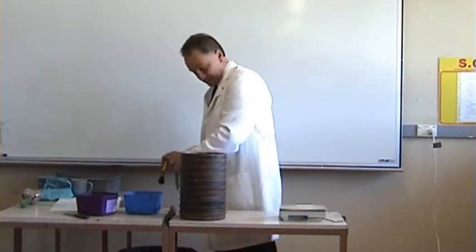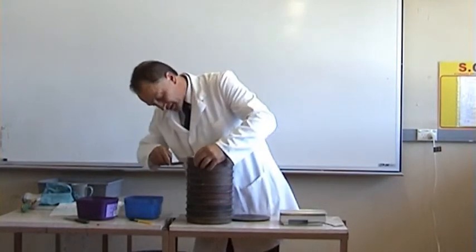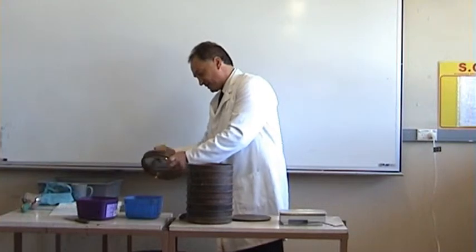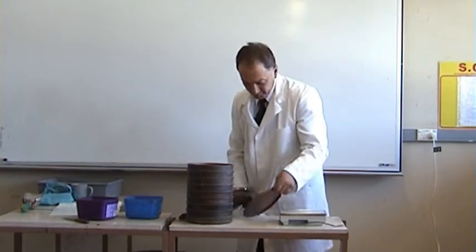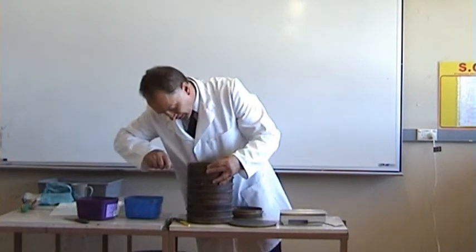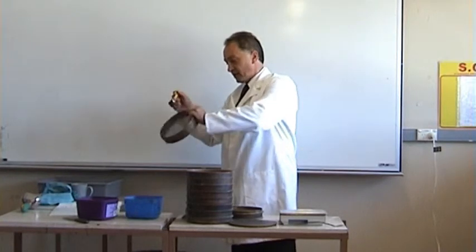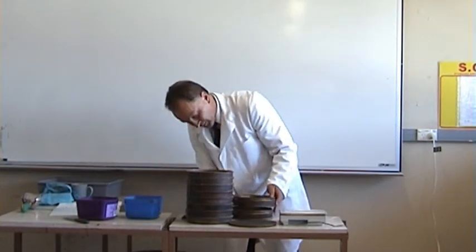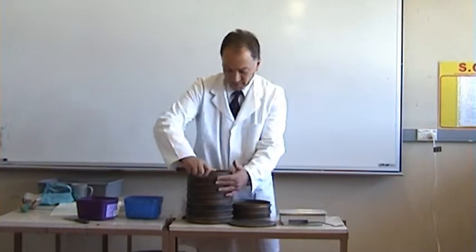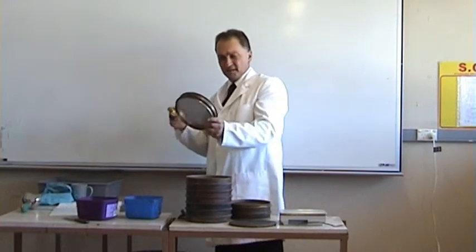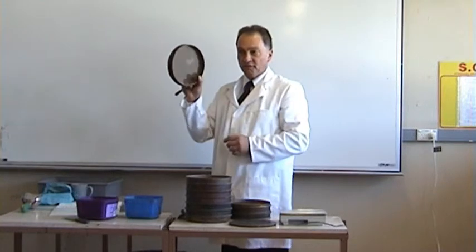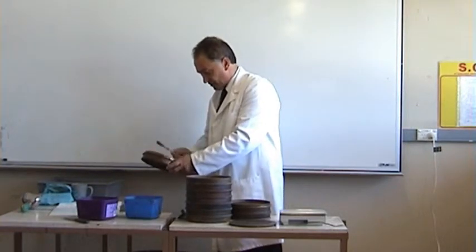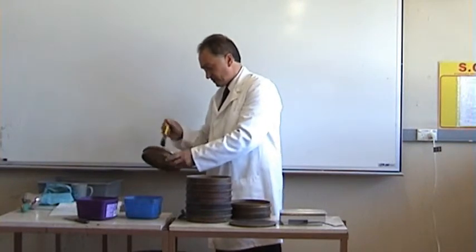The sieves are now brushed clean and if need be separated by carefully prying them loose. Once cleaned, they are stacked again keeping the largest on top and the smallest on the bottom. When cleaning the sieves it's important not to perforate or damage the fine mesh, especially with the finer sieves. Tapping is allowed to facilitate separation and cleaning, but brushing should be done very carefully. Sieving is carried out for a minimum of 15 minutes.